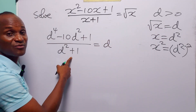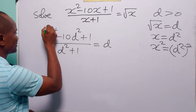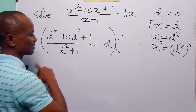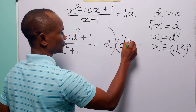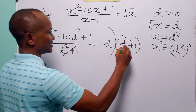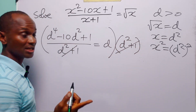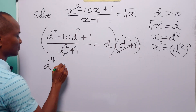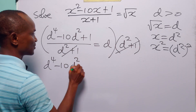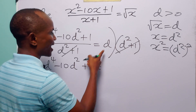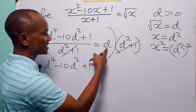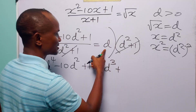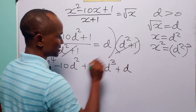Now, to get rid of this fraction on the left-hand side, let us multiply through this equation by d squared plus 1. On the left-hand side, this is going to cancel that, leaving us with d to the power 4 minus 10d squared plus 1. While on the right-hand side, we have d times d squared, which is d cubed, plus d times 1, which is d.